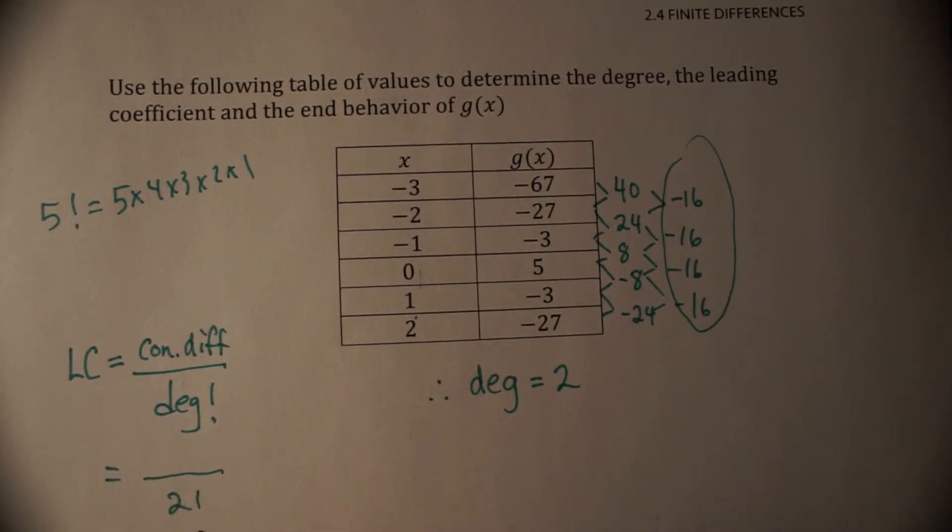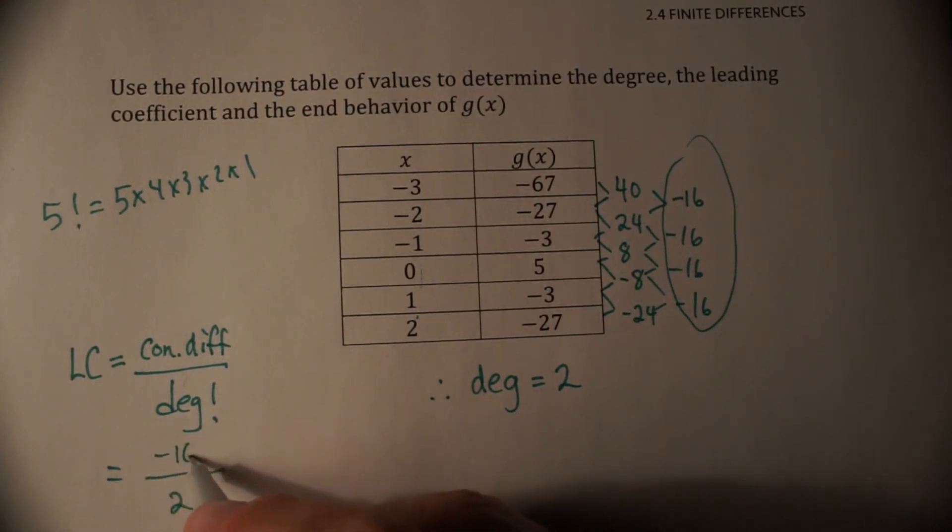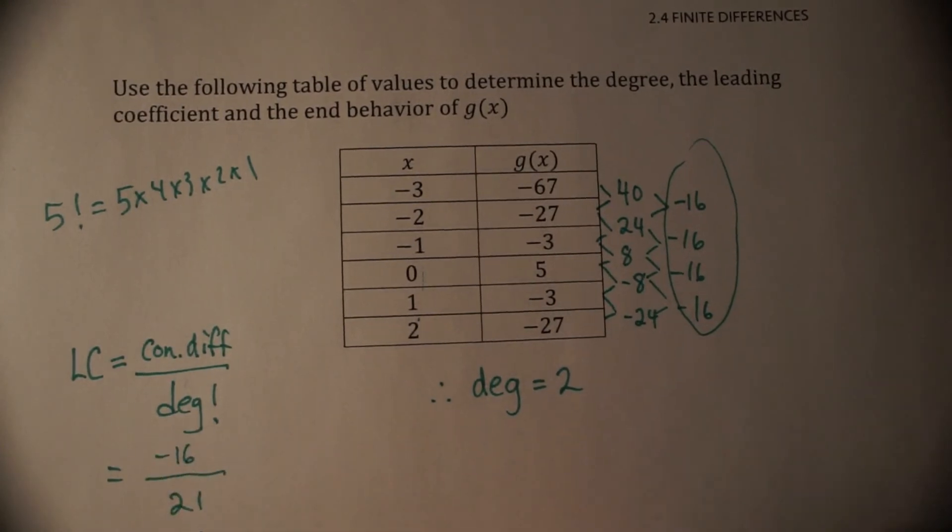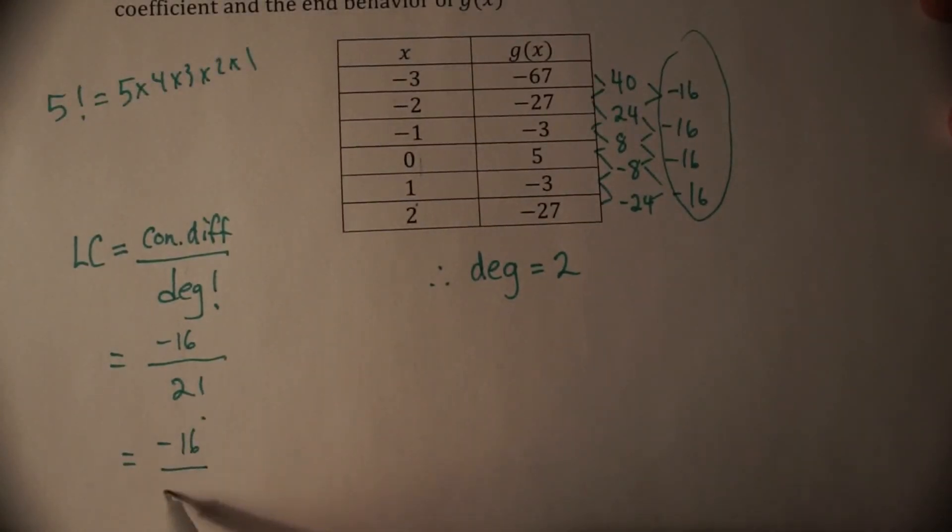And our constant difference is negative 16. So altogether, we have negative 16 over 2 times 1. That's not very much. So negative 8. So our leading coefficient is negative 8.